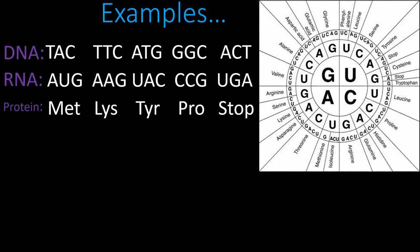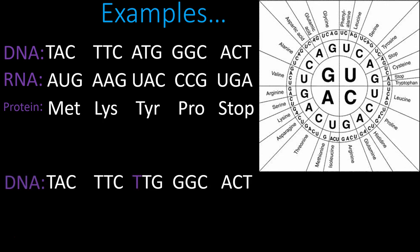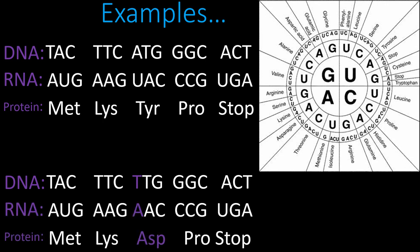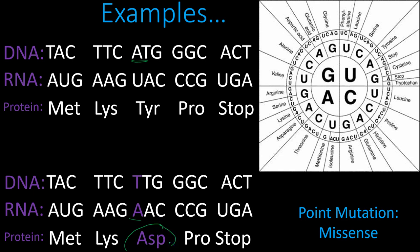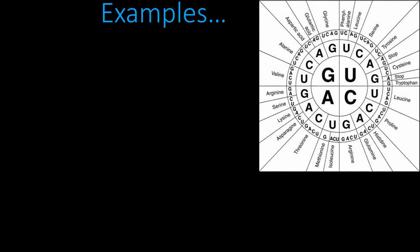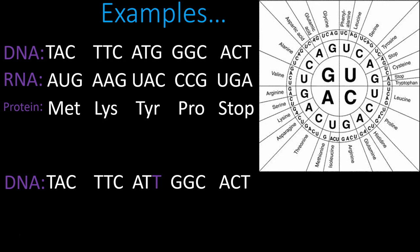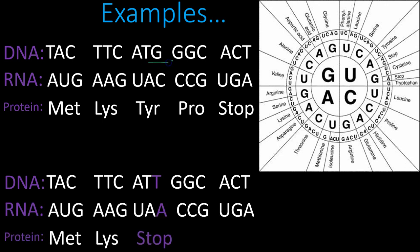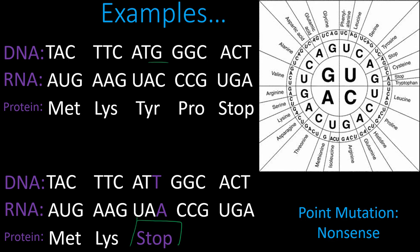Now let's look at what this actually looks like in a strand of DNA. Using a reference original DNA strand: if I change an adenine to a thymine, that changes the RNA sequence, which changes the amino acid — asparagine where there used to be a tyrosine. That's a point mutation missense, because there was a change in only one base that altered the amino acid. If I change a guanine to a thymine and it causes the protein to stop early, that would be a point mutation nonsense.